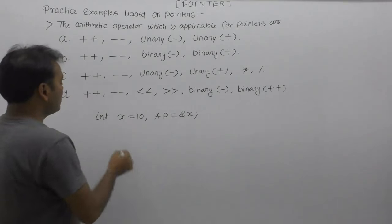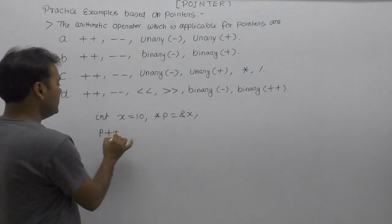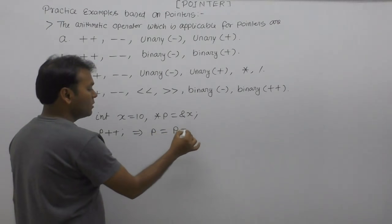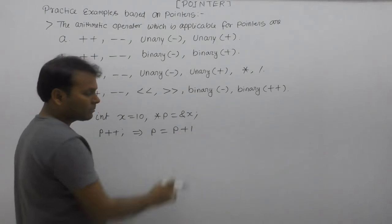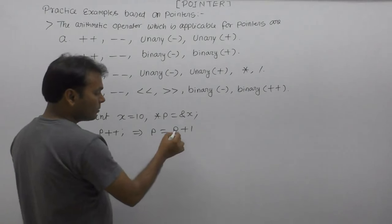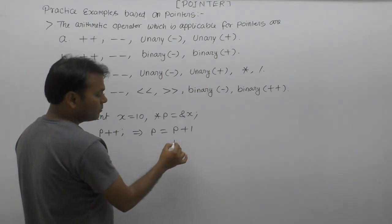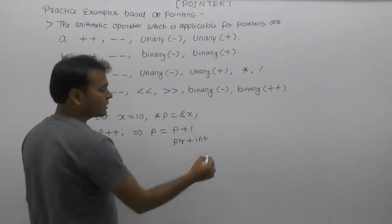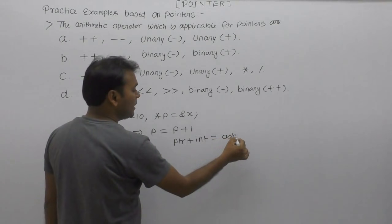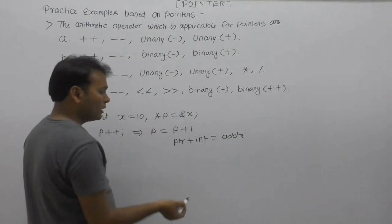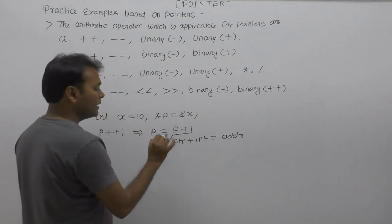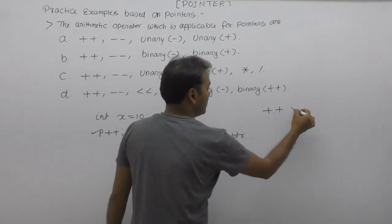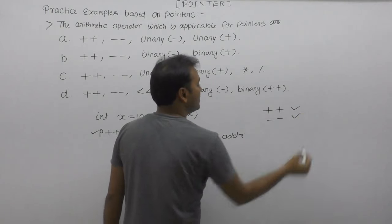Pointer variable increment is possible because internally it is equivalent to p equals to p plus one. This is the plus arithmetic operator case: pointer plus integer adds to the address and assigns back to the pointer. So plus-plus is a valid operation. Similarly, minus-minus is also a valid operation for pointers.